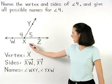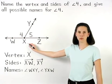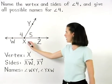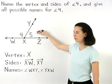But we cannot call it angle X, because then we wouldn't know if we were talking about angle 4 or angle 5, since angle 5 also has a vertex of X.